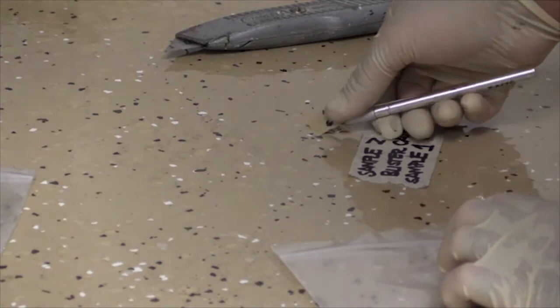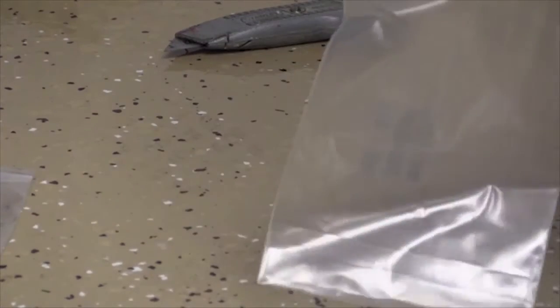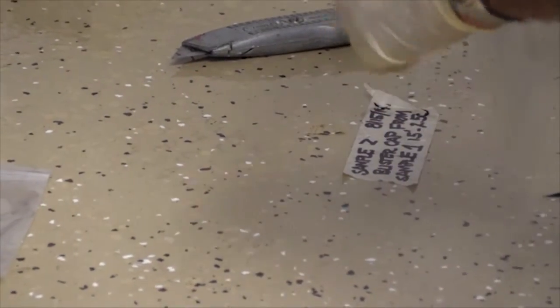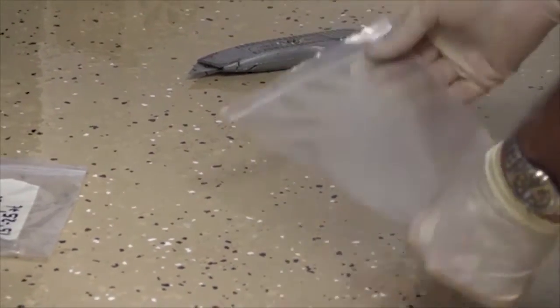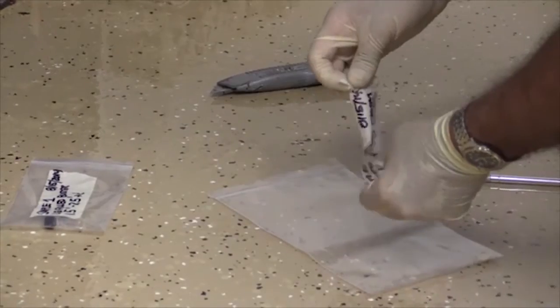So what I'm going to do is I'm going to take that sample, I'm going to put it directly into my sample bag, and seal it. Take my label from the floor, showing that this is sample two, and put it right on my bag.